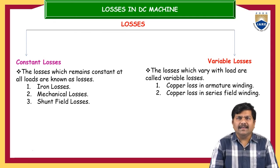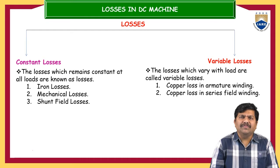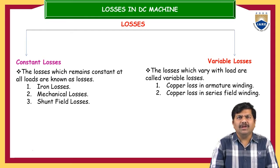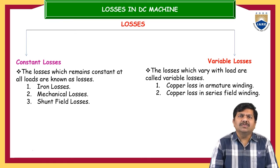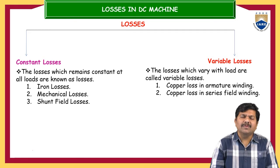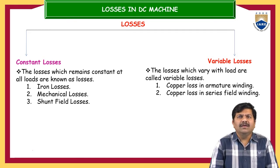Broadly, if you are classifying the losses, they are classified into constant losses and variable losses. Constant losses means losses which always remain the same irrespective of the loading conditions on the DC machine — whether at no load, 10%, 20%, 50%, or 70% of maximum load. It never depends on the loading conditions; the load is proportional to that particular load.